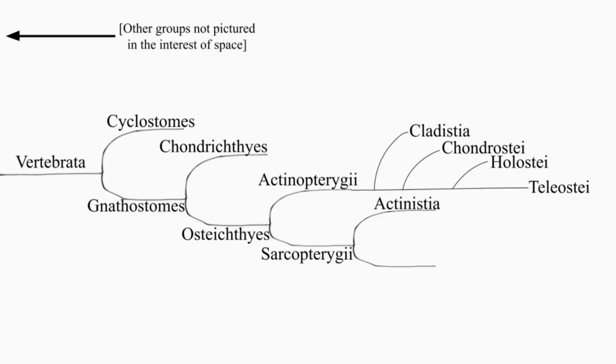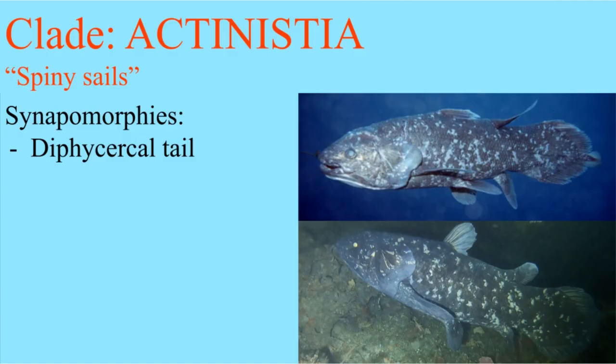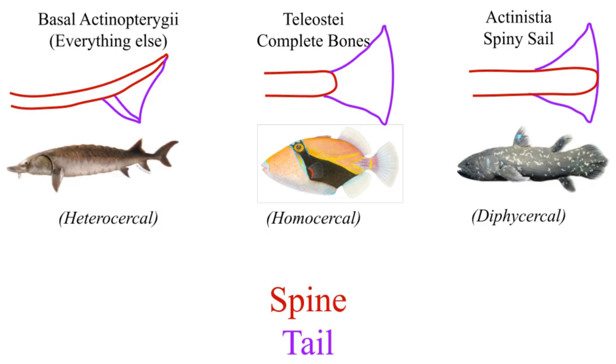Sarcopterygii divides into spiny sails and small bellows sails. Don't be fooled by the symmetry of the names, there are two species in this group. Actinistia have a tail that's symmetrical, but in a stupid way...